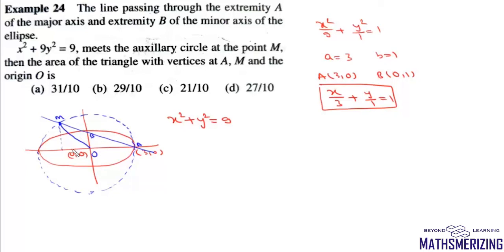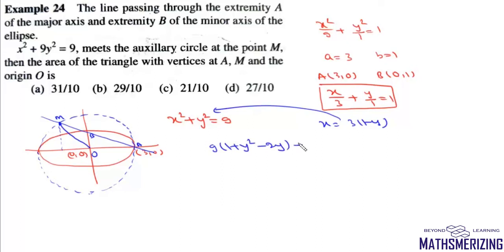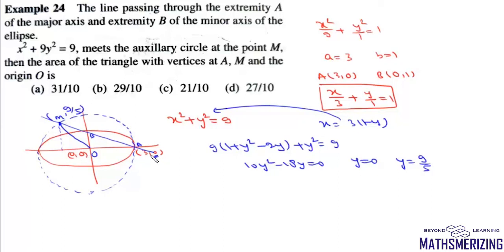Substituting x = 3(1 - y) into x² + y² = 9: 9(1 - y)² + y² = 9, giving 10y² - 18y = 0, so y = 0 or y = 9/5. The point N has y-coordinate 9/5 (y = 0 corresponds to A). Area of triangle OAN = ½ · base · height = ½ · 3 · (9/5) = 27/10 square units.